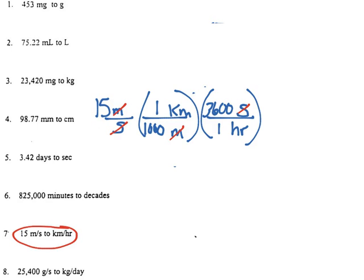So in my calculator, I'm doing 15 times 3,600 because those are in the numerator and I am dividing by a thousand and I get 54 kilometers, which is left in the numerator over hours, which is left in the denominator.